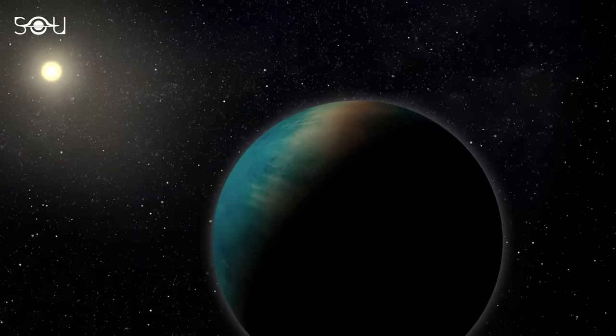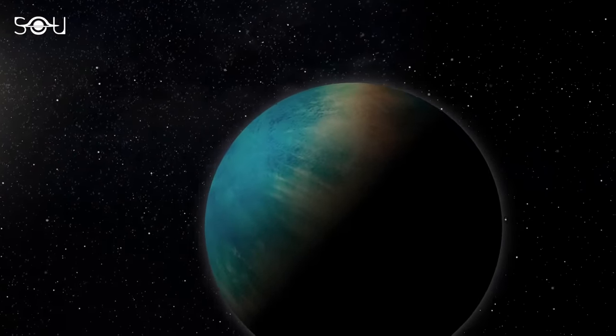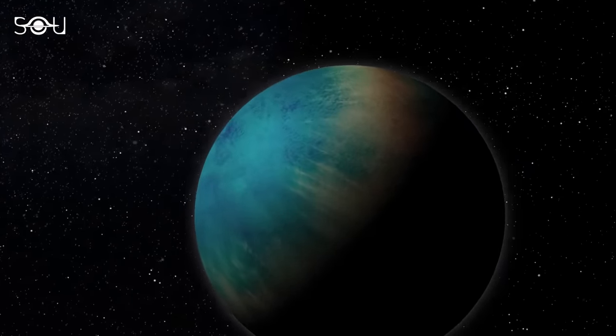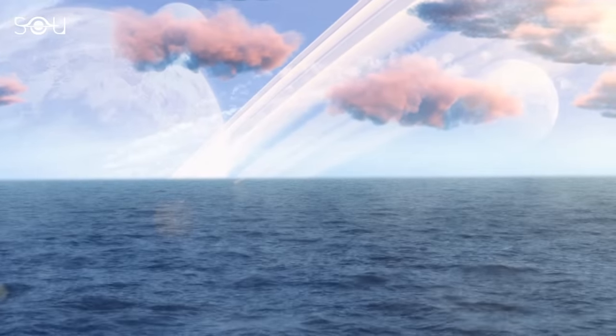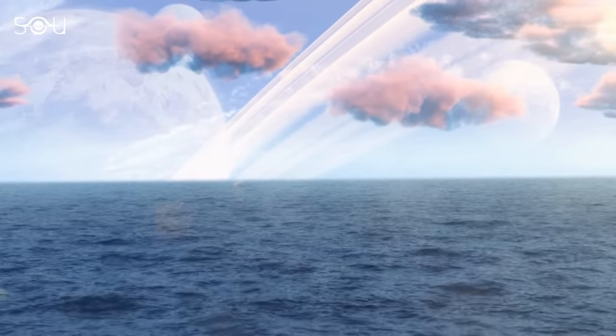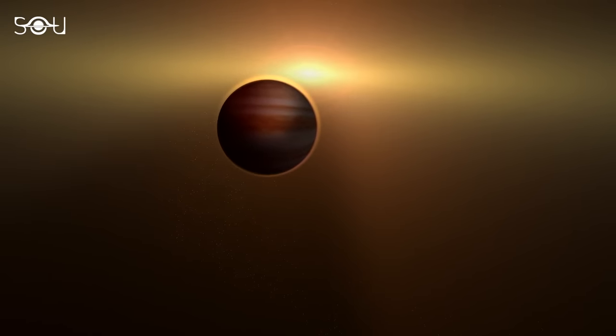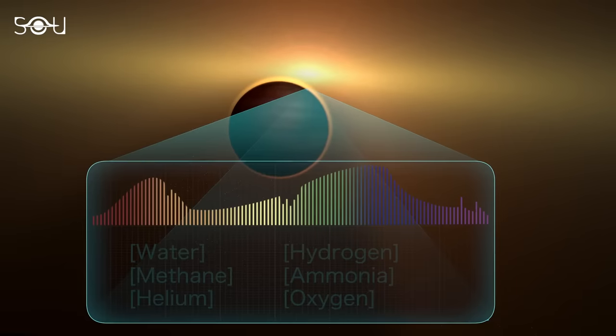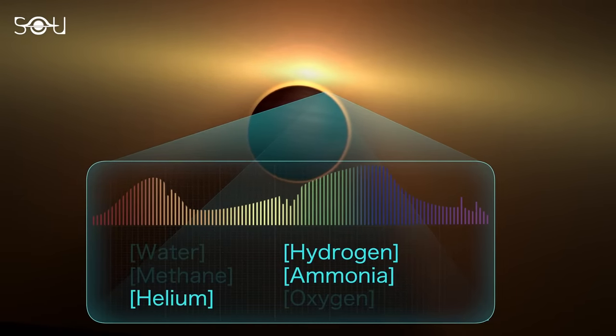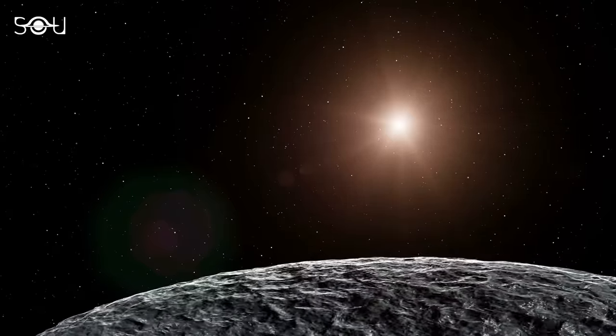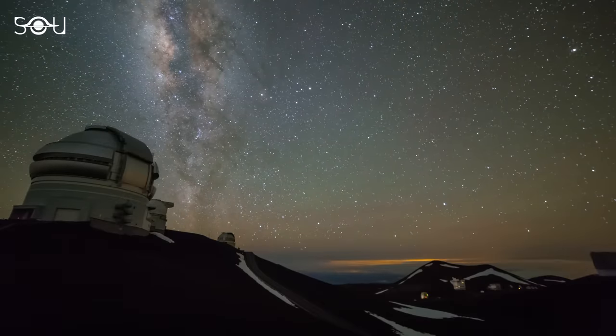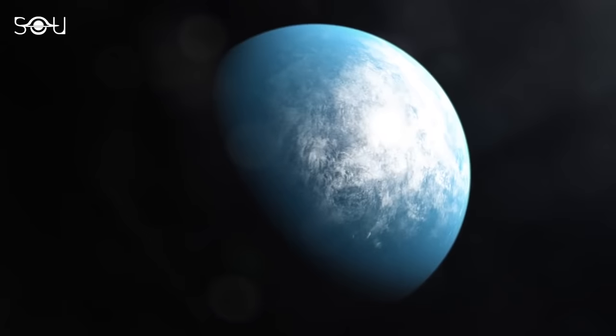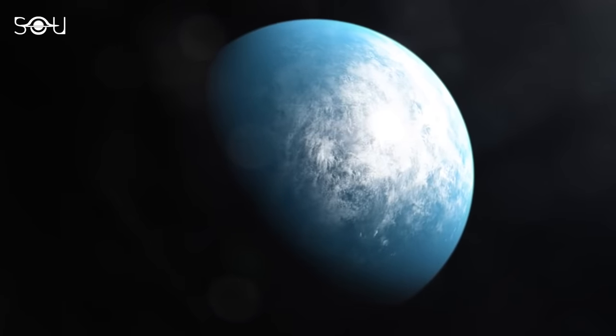However, determining whether TOI 733b possesses a secondary atmosphere or if it's an ocean planet is still a significant challenge. A detailed analysis of the planet's atmosphere is required for a definitive answer. Currently, the most reliable method for such an analysis involves the comparison of starlight that has passed through the planet's atmosphere with its unfiltered counterpart. But TOI 733b isn't an ideal candidate for such a probing exercise, necessitating the wait for the next generation of telescopes to uncover the atmospheric secrets of TOI 733b.